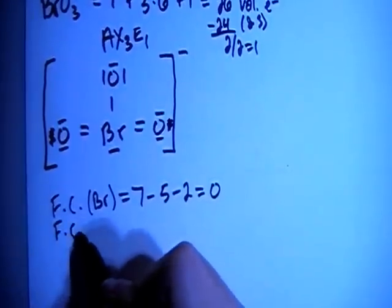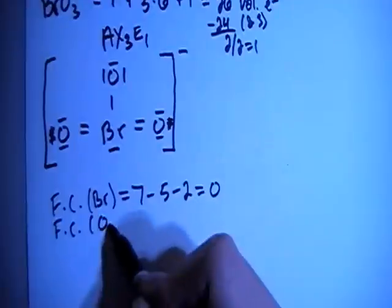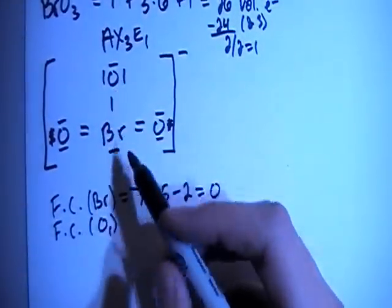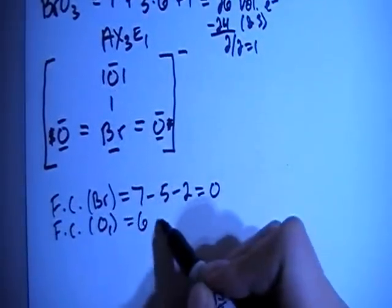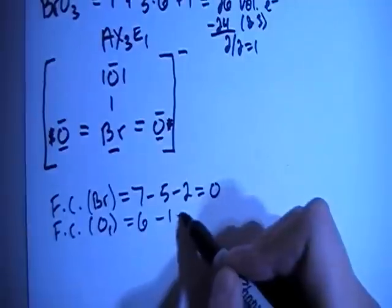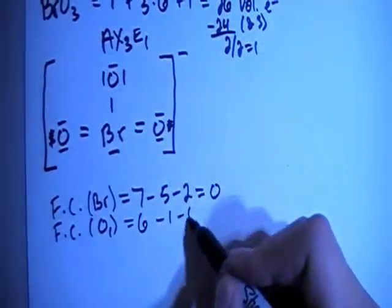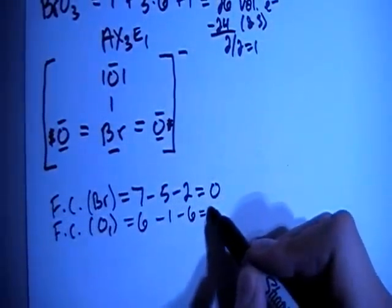Now we can check the formal charges on, let's say, the oxygen with a single bond, O sub 1. So this oxygen right here, that's 6 valence brought in minus 1 bond minus 2, 4, 6 non-bonding electrons for a formal charge of negative 1.